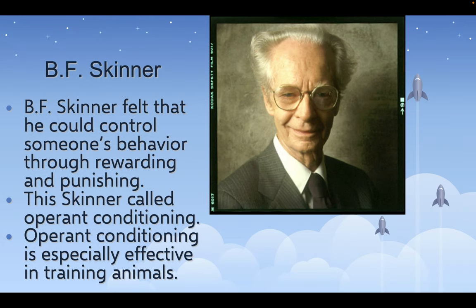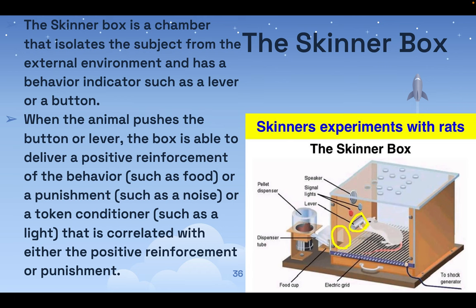B.F. Skinner felt he could control someone's behavior through rewarding and punishing — he called this operant conditioning. Operant conditioning is especially effective in training animals. The Skinner box is a chamber that isolates the subject from the external environment and has a behavior indicator such as a lever or button. When the animal pushes it, the box delivers positive reinforcement like food, or punishment like a noise, or a token conditioner like a light correlated with either outcome.